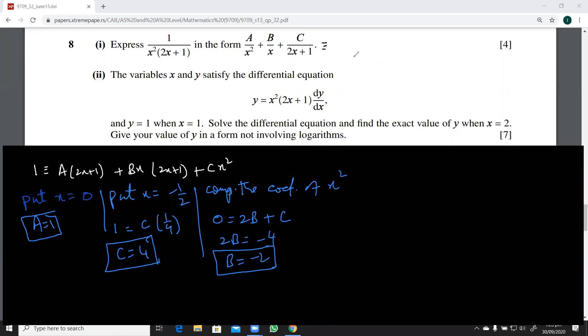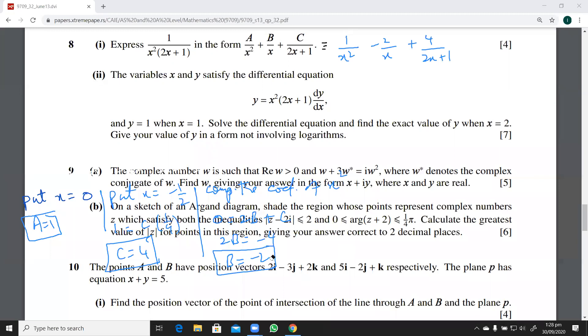So this is 1 over x squared minus 2 over x plus 4 over 2x plus 1. So these are the partial fractions that we have. Now we move on to the second part.